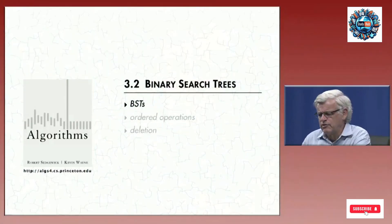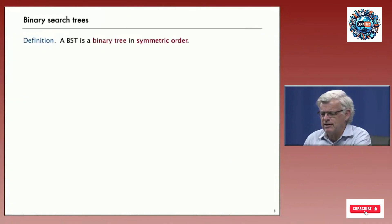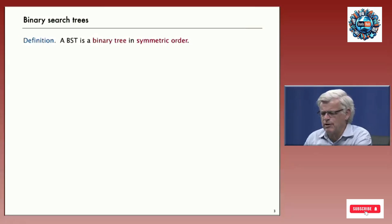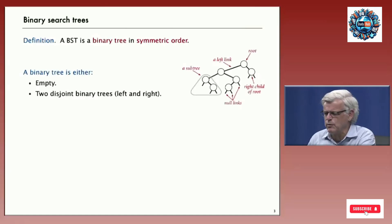Welcome back. Next, we're going to talk about binary search trees, a classic data structure that will enable us to provide efficient implementations of symbol table algorithms. Let's look at the basic binary search tree data structure. With heaps, we talked about implicit representations of trees with an array. For binary search trees, we're going to talk about actual explicit tree data structures. A binary search tree is a binary tree in symmetric order.